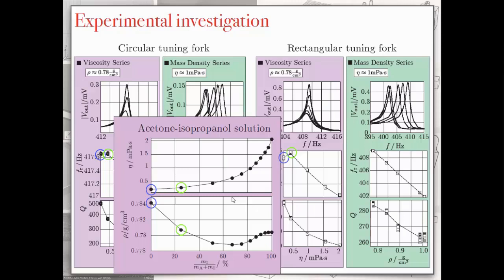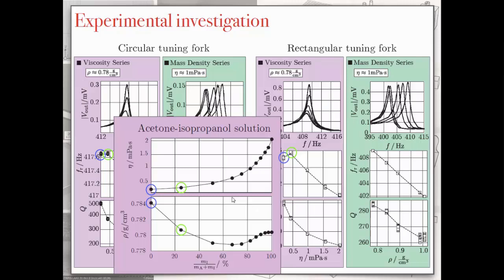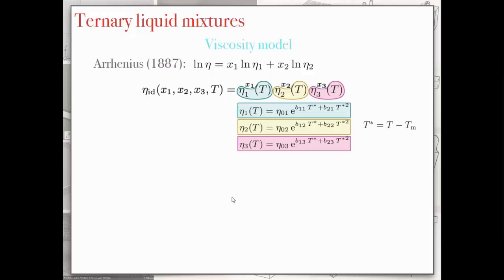So again, for getting this liquid series with constant viscosities or constant mass densities, binary mixtures might not be the right choice. So we have to use ternary liquid mixtures, which are not quite well modeled yet. And what we did, based on a model for the viscosity of binary mixtures, which was proposed by Arrhenius in 1887, we extended this equation, so this is now salt viscosity, for ternary liquid mixtures, where each pure viscosity component, of course, is temperature dependent.